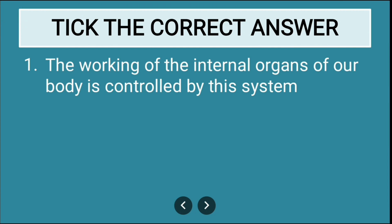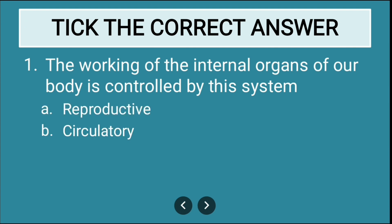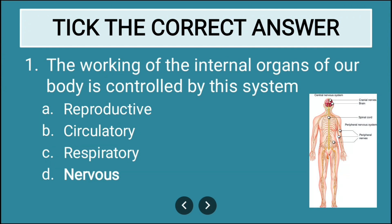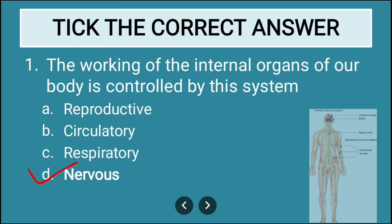The first question: The working of the internal organs of our body is controlled by this system. The options are reproductive, circulatory, respiratory, or nervous. The correct answer is the nervous system, so option D is correct.